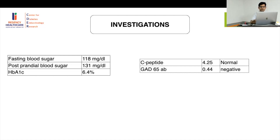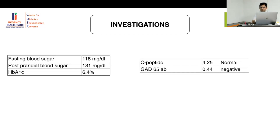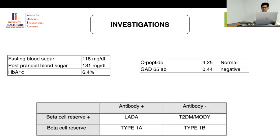Further investigations showed C-peptide levels were normal at 4.25 and GAD antibodies were negative. GAD antibodies are 70% sensitive for type 1, and C-peptide is also normal, so type 1 is out. Based on the classification of autoimmunity versus beta-cell function, this is autoimmune-negative and beta-cell-positive — antibody negative with good beta-cell reserve, which brings us to the dilemma: is it type 2 or MODY?